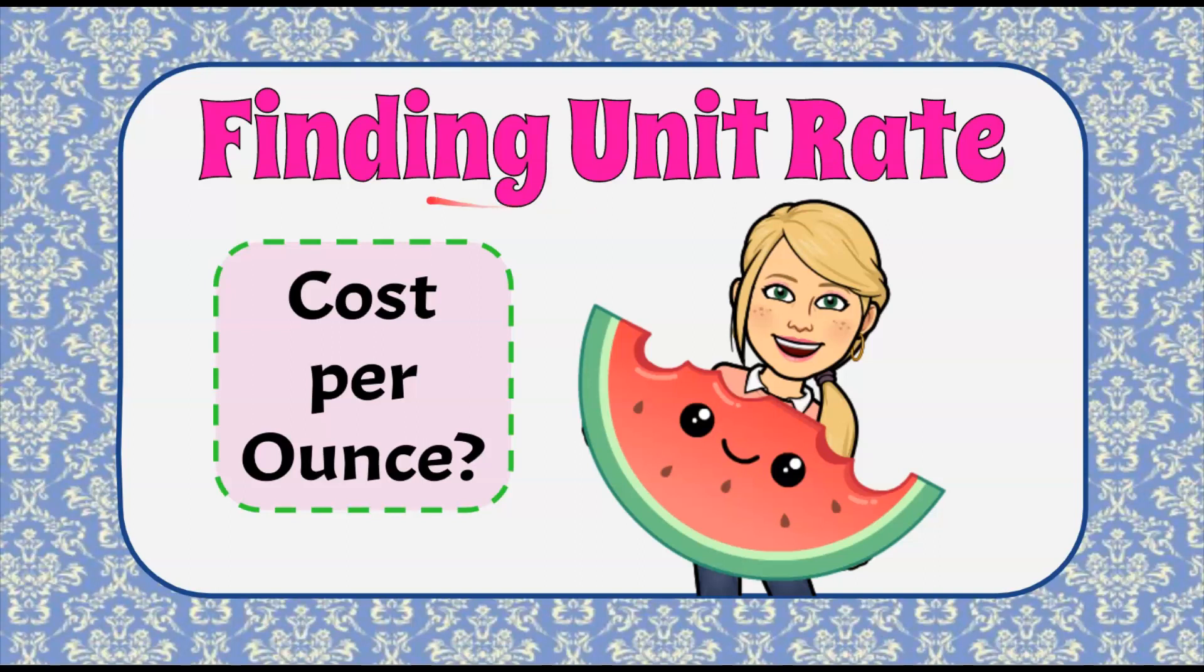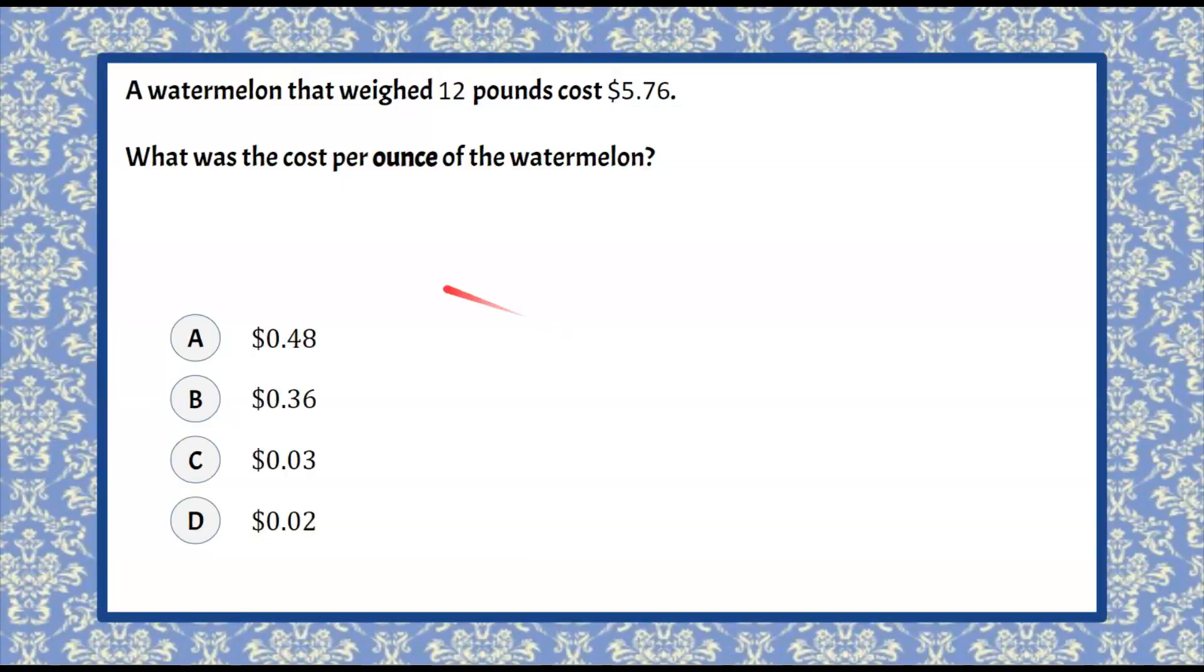It's the Magic of Math here, and today we're going to be finding unit rate cost per ounce of buying a watermelon. Here's our question. We have a watermelon that weighed 12 pounds and cost $5.76. We're asked what was the cost per ounce of the watermelon, and you're given four answer choices.